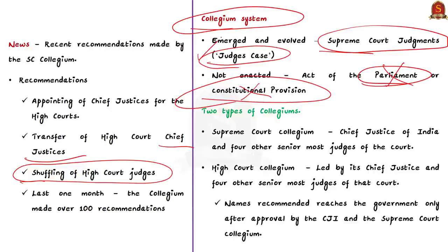This point is very important because in prelims you can expect statements like 'Supreme Court Collegium System was enacted by an Act of Parliament.' So remember, the Collegium System emerged and evolved only through the judgments of Supreme Court cases. These cases are called Judges' Cases.